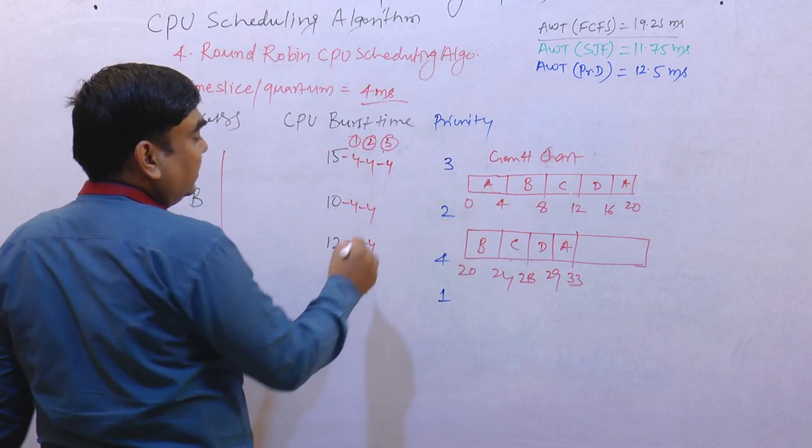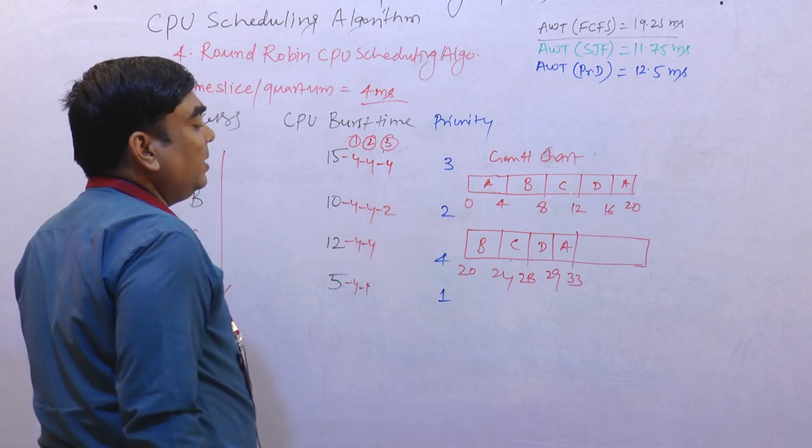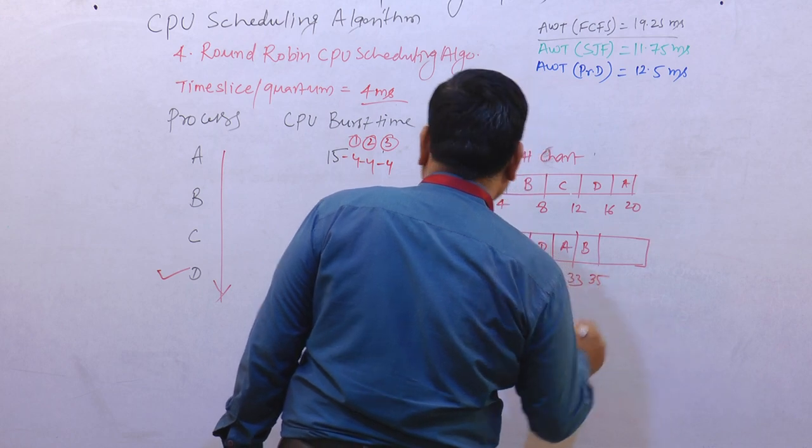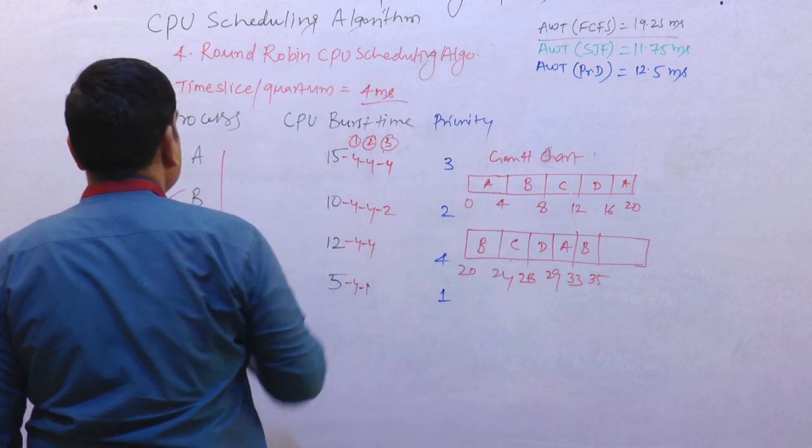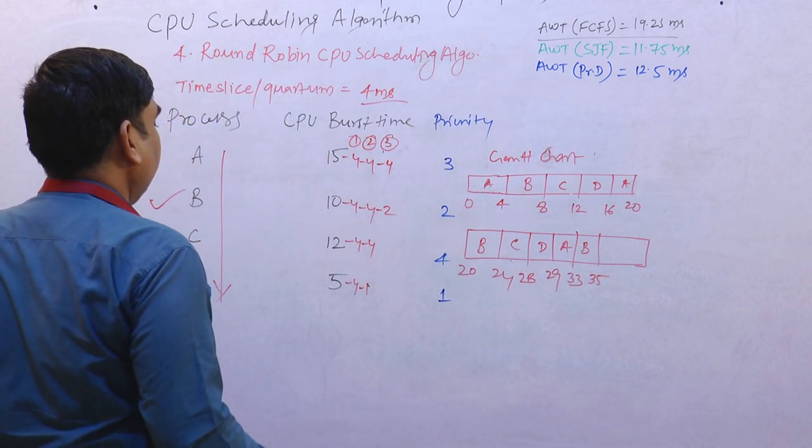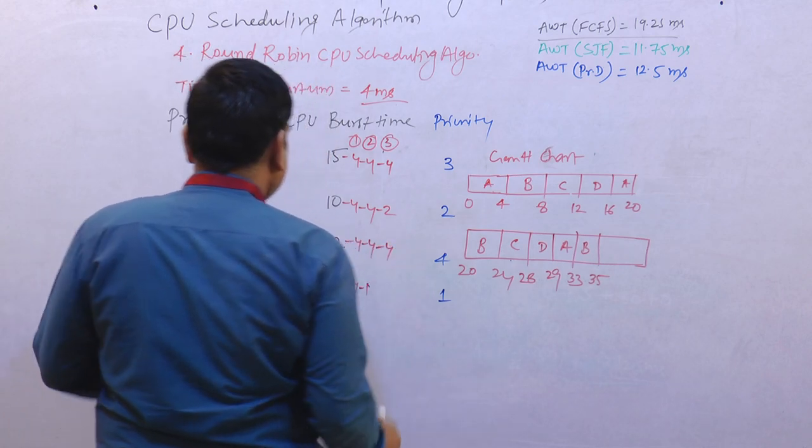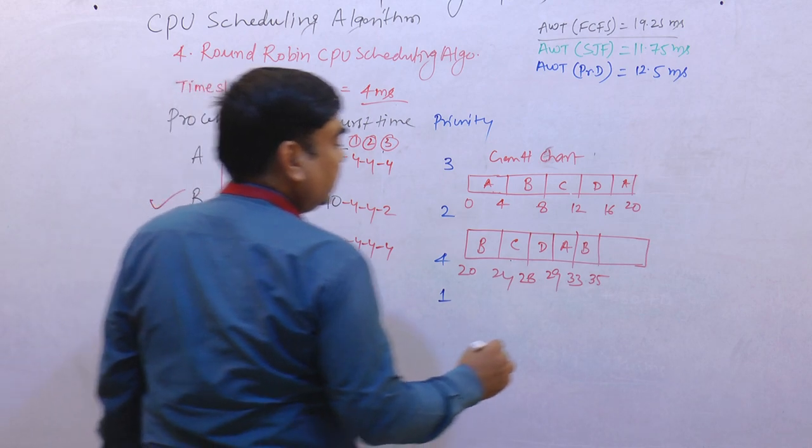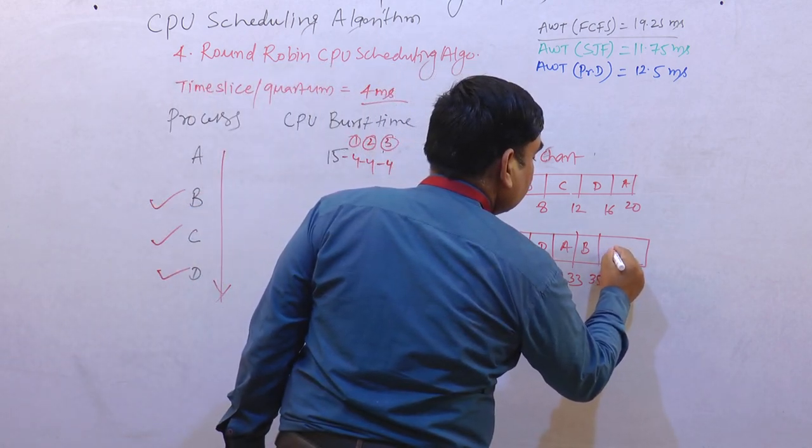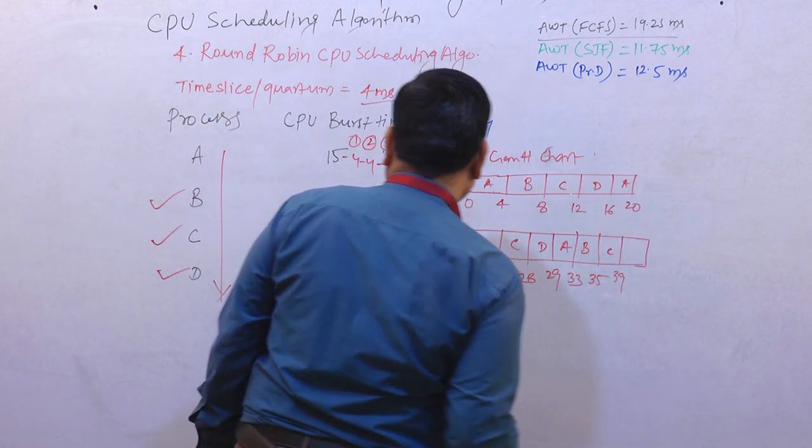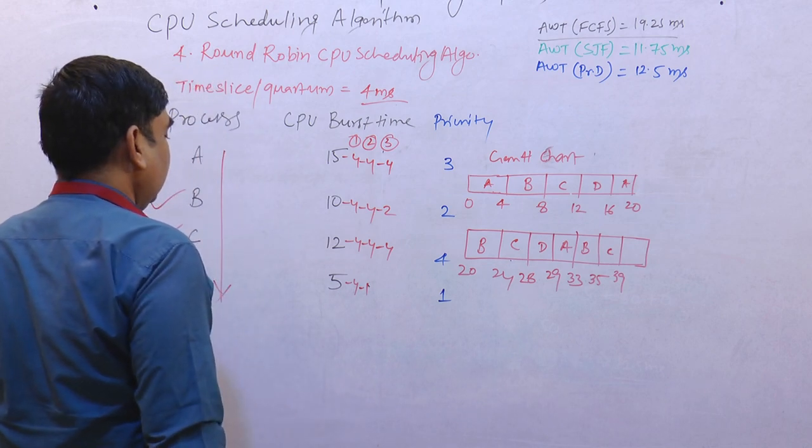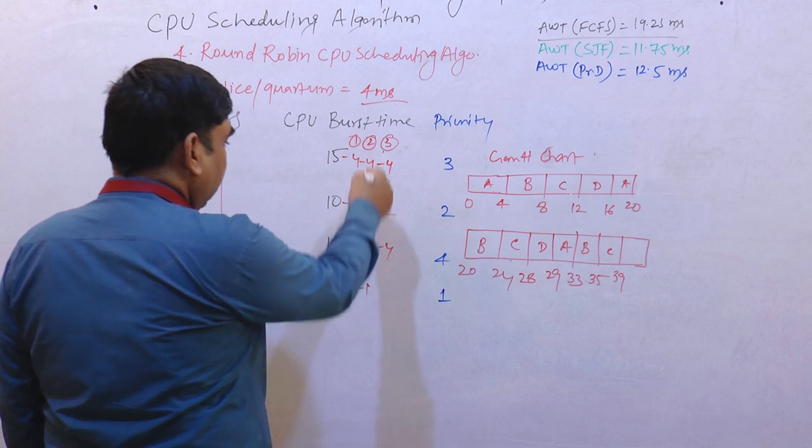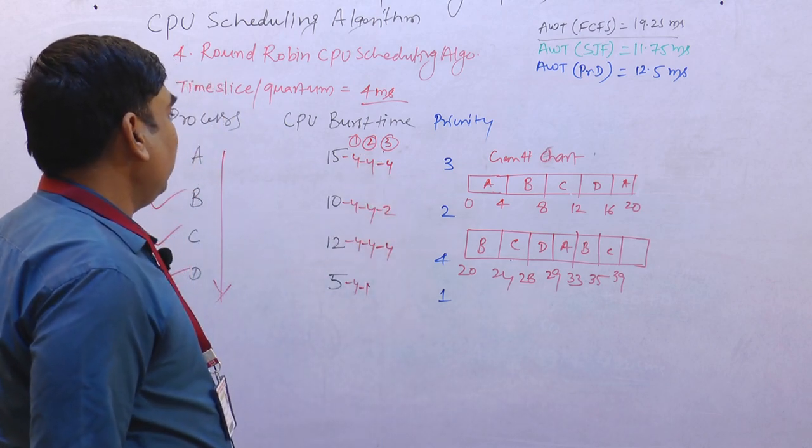In process B, we have the remaining 2 milliseconds. We take 4 from C, and B is complete. We can take 4 from C and C also will be complete. The process is already complete in second, so again we will go for round four.